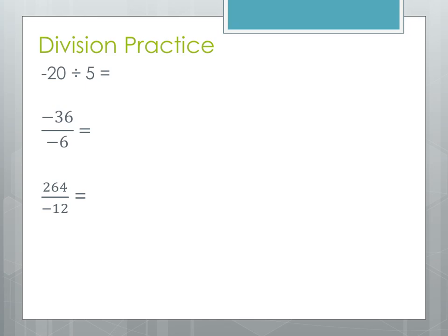Now let's look at some division examples. We have different ways of writing division — using the division sign, or writing the problem as a fraction. First example: negative 20 divided by 5. The signs are different, so our answer is going to be negative. 20 divided by 5 is 4, giving us negative 4. Second example: negative 36 divided by negative 6. Signs are the same, so we get positive 6.